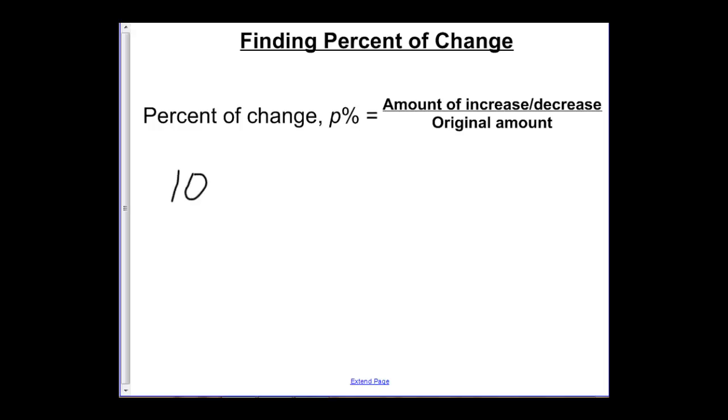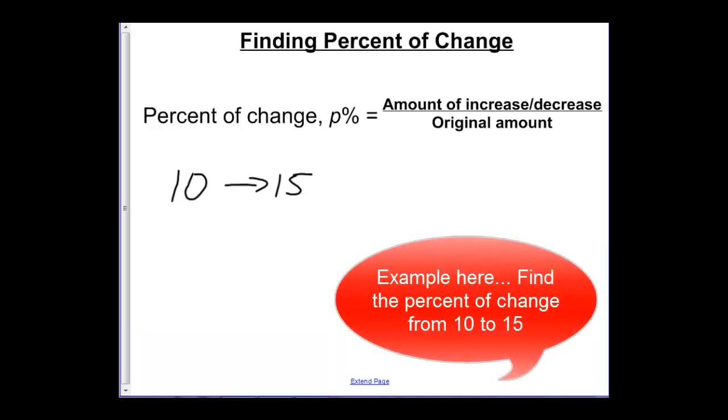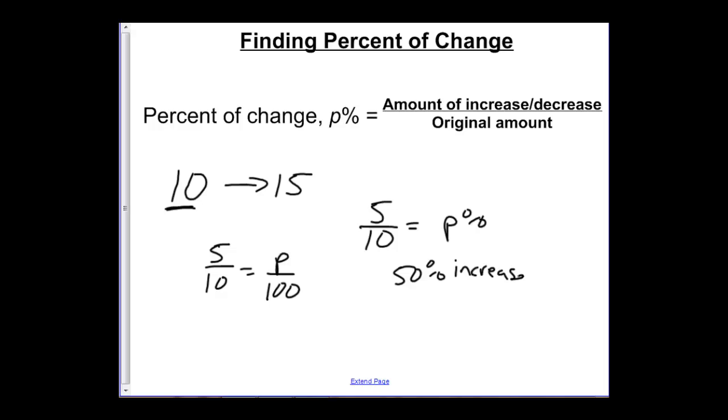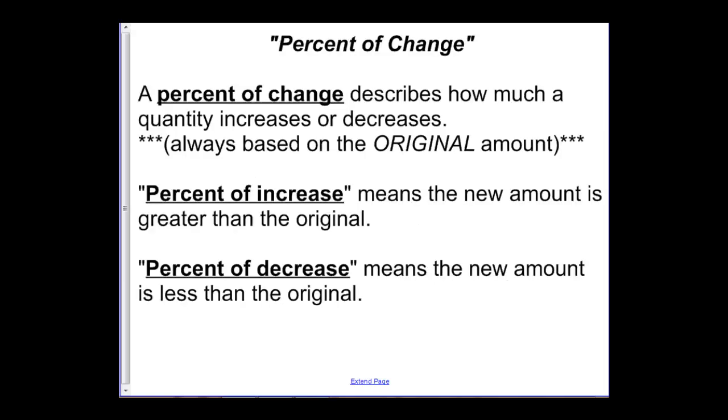Let me give you a real quick example before we do a word problem. If 10 became 15, and I wanted to know the percent of change. Notice the amount of increase, it went from 10 to 15, so it went up 5. The original amount would be what we had to start with, which would be 10. So we'd have 5 out of 10. I want that as a percent. Notice 5 out of 10 is 50 percent. The other way I could have done that is with the percent proportion, 5 out of 10 equals P out of 100. But that would be a 50 percent, and then we always want to include increase or decrease, because that increased by 50 percent of the original.